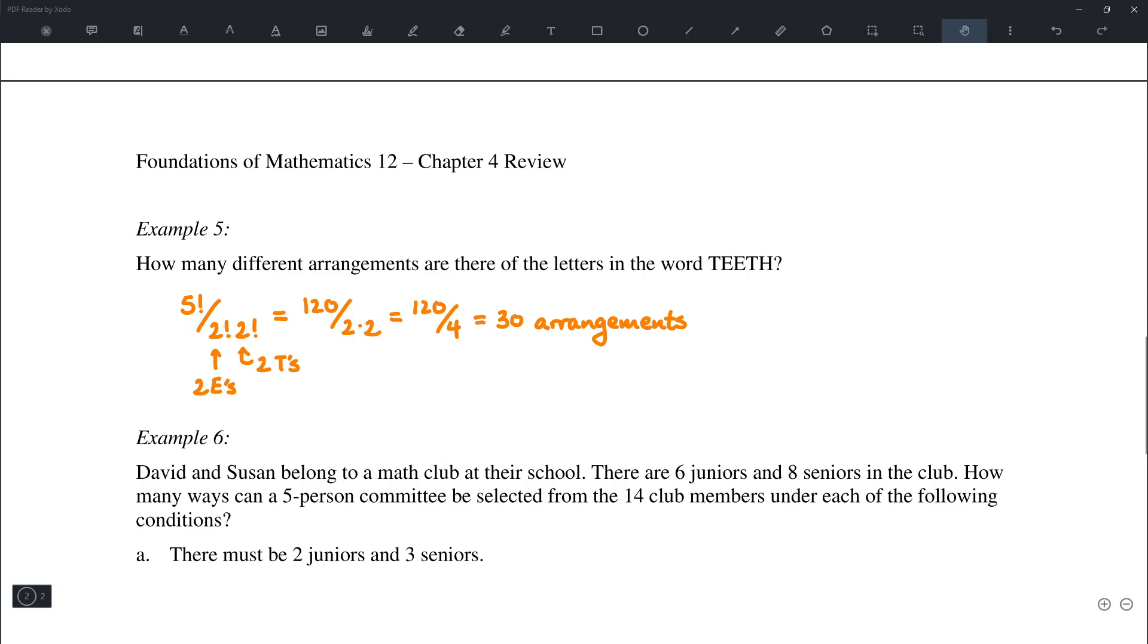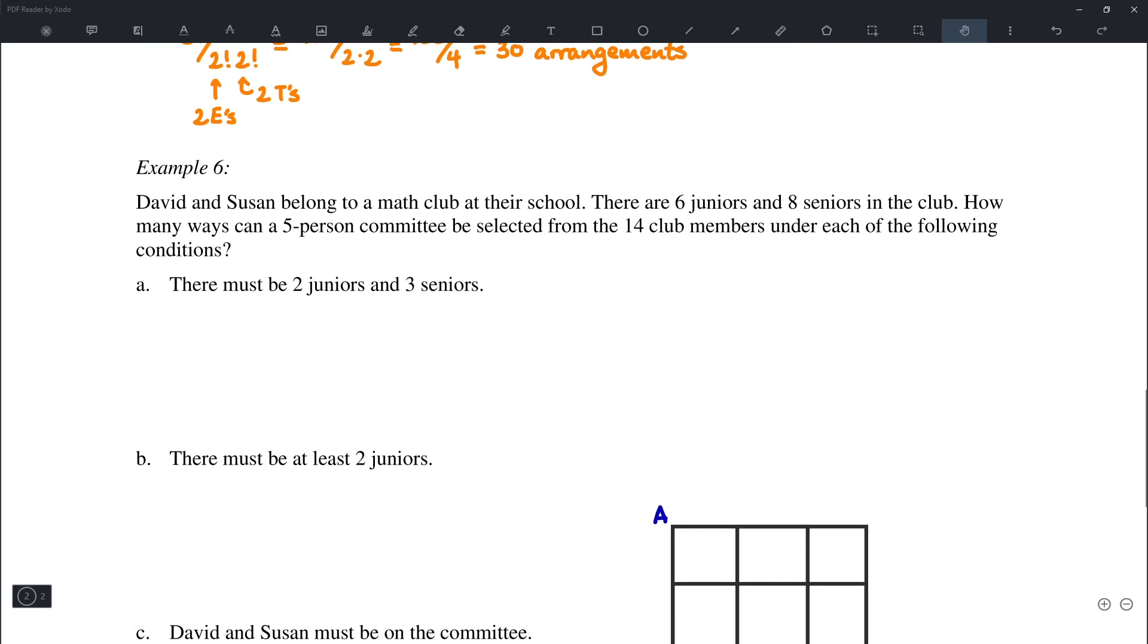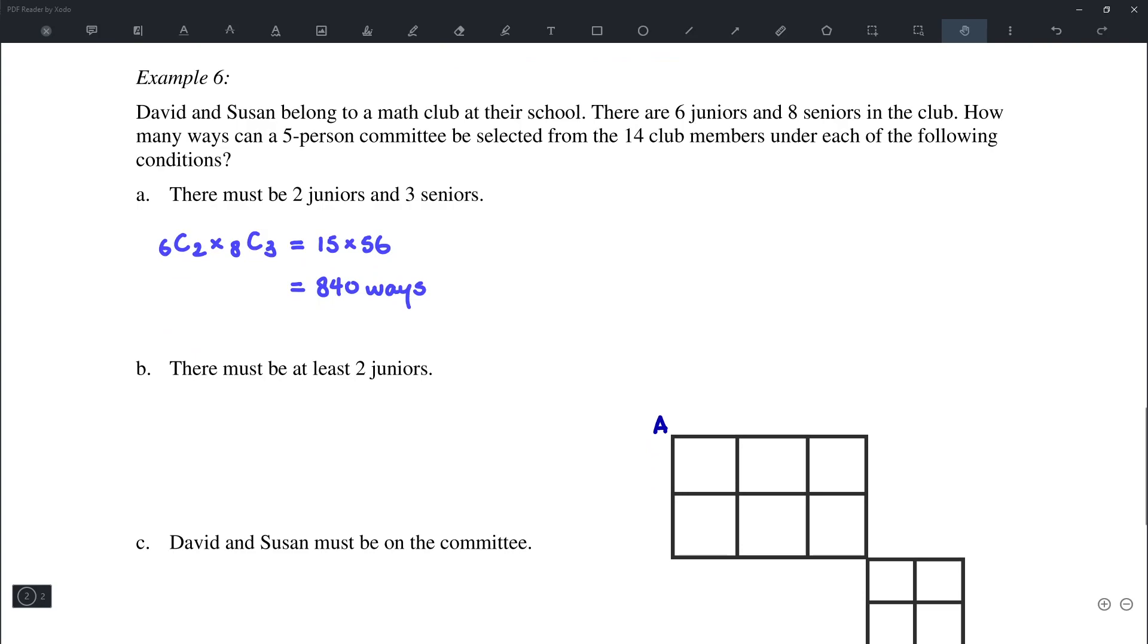Okay, next we have example number 6, which is one involving combination. So David and Susan belong to a math club. There are six junior students and eight senior students in the club. And we're trying to form a five person committee that can be selected from the 14 club members under each condition. So first case, we have to have two juniors and three seniors. So we have 6C2 times 8C3. Now 6C2 is 15, 8C3 is 56, so that would be 840 ways. So that's a question involving both combination and also the fundamental counting principle.